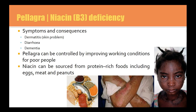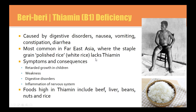Pellagra is B3 deficiency and includes symptoms of dermatitis, diarrhoea and dementia. It is controlled by improving the working conditions of poor people and by getting protein-rich foods including eggs, meat and peanuts.